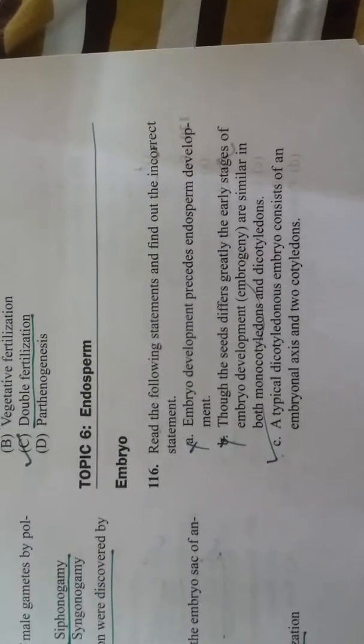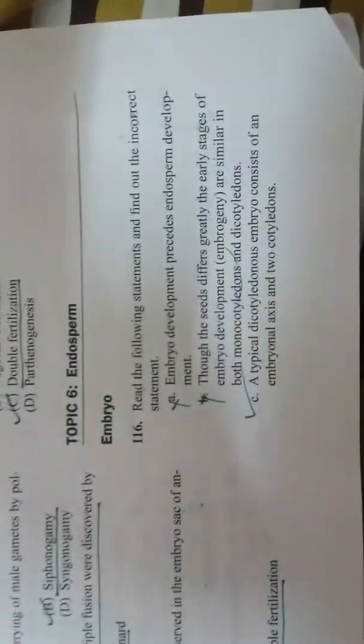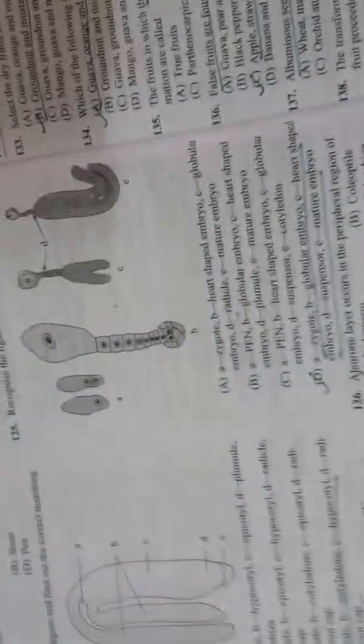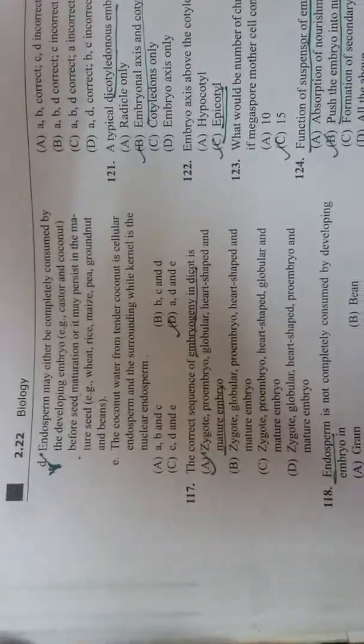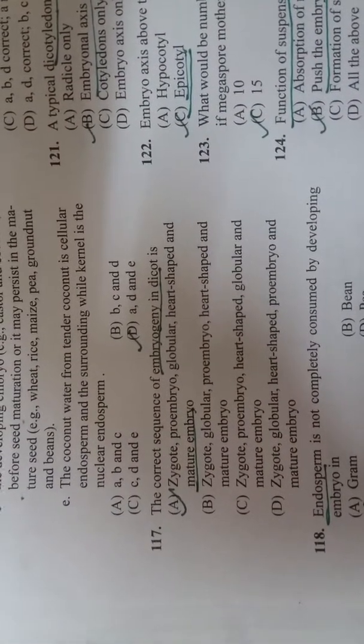A typical dicotyledonous embryo consists of an embryonal axis and two cotyledons.